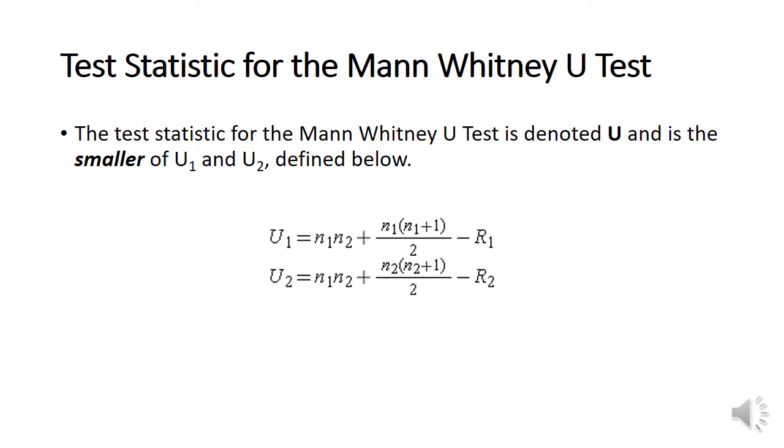For U2, that equals N1 times N2 plus N2 times (N2 plus 1) divided by 2 minus R2.